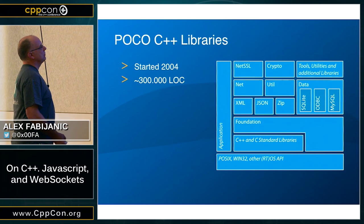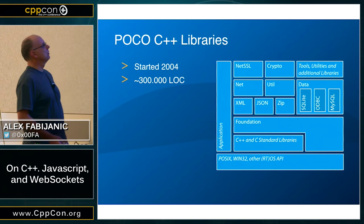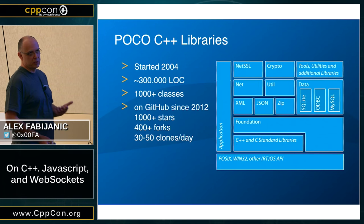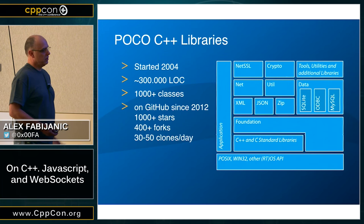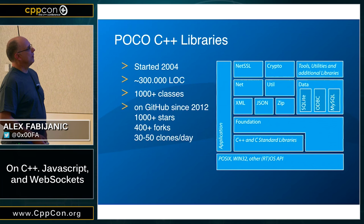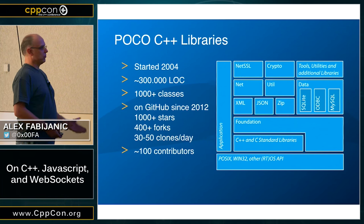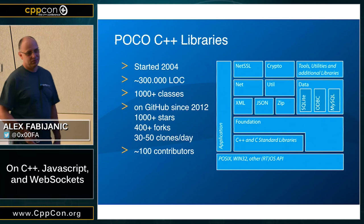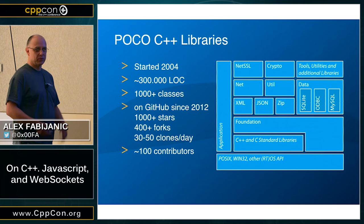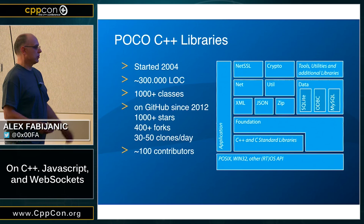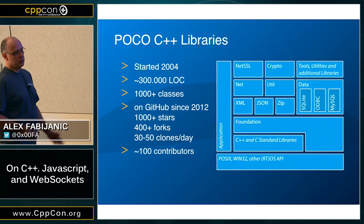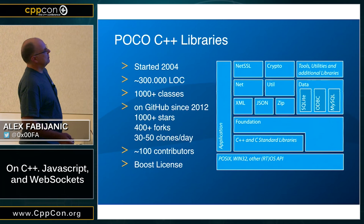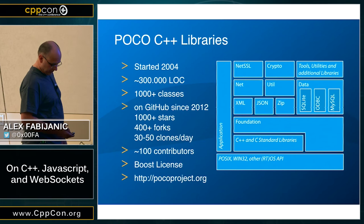As I mentioned, POCO was started in 2004. Currently it's around 300,000 lines of code and more than 1,000 classes. We've been on GitHub since 2012 and it's been one of our best moves — if you've ever been on SourceForge, there's no comparison in productivity and collaboration. We have around 100 contributors, though not all active at once. At any given time we have maybe a couple dozen people contributing regularly. I've been leading the project for probably seven or eight years, and Gunter is the founder and also one of the leads. It's Boost-licensed and here is the website where you can get POCO.